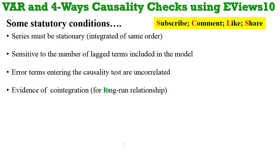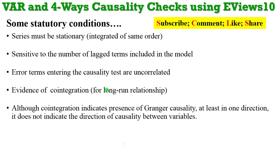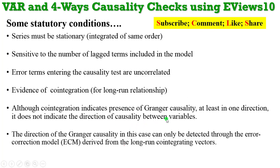If you are proceeding to establish a vector autoregression model, then there must be evidence of cointegration. Even though cointegration indicates the presence of Granger causality in at least one direction, it does not indicate the direction of causality between the variables. After doing cointegration it gives you an idea that there's causality in the model, but not the direction. The direction of Granger causality will be detected through the error correction mechanism derived from the long-run cointegrating vectors. Note that cointegration is not required if you are just doing an unrestricted VAR, which is a short-run model.